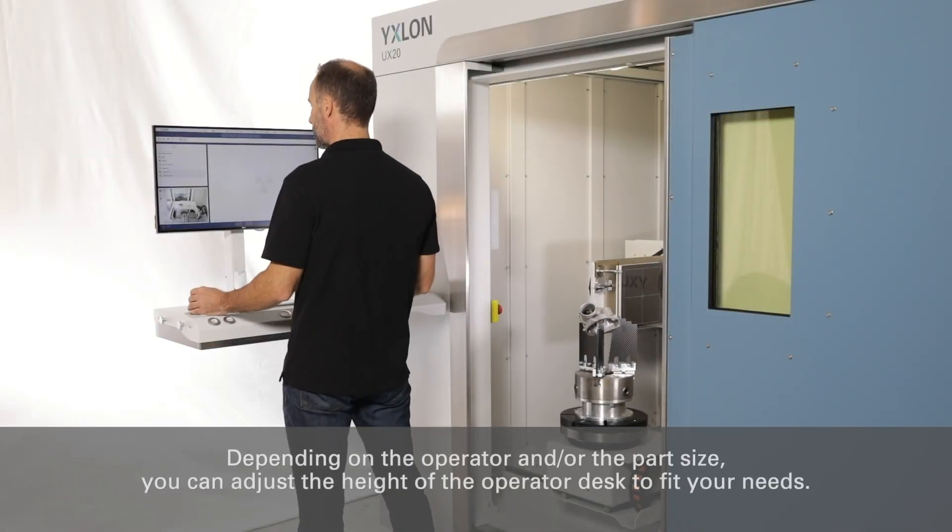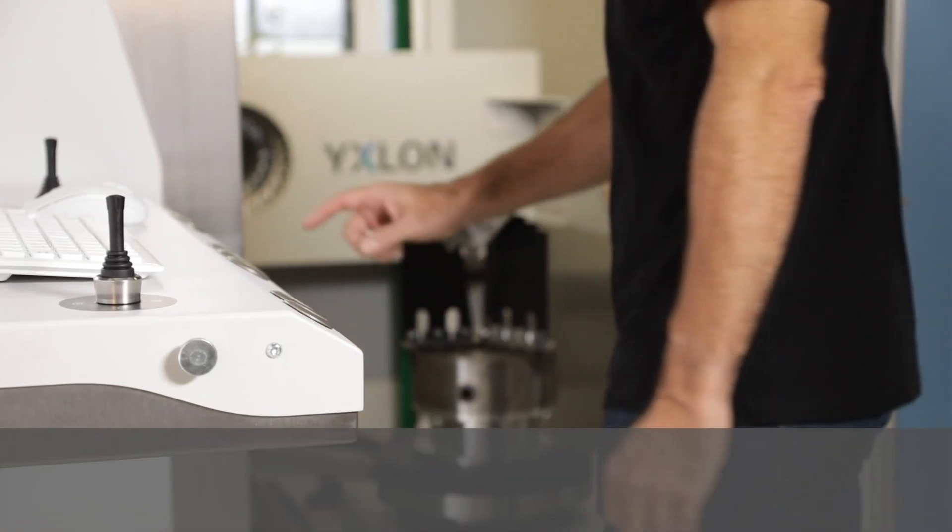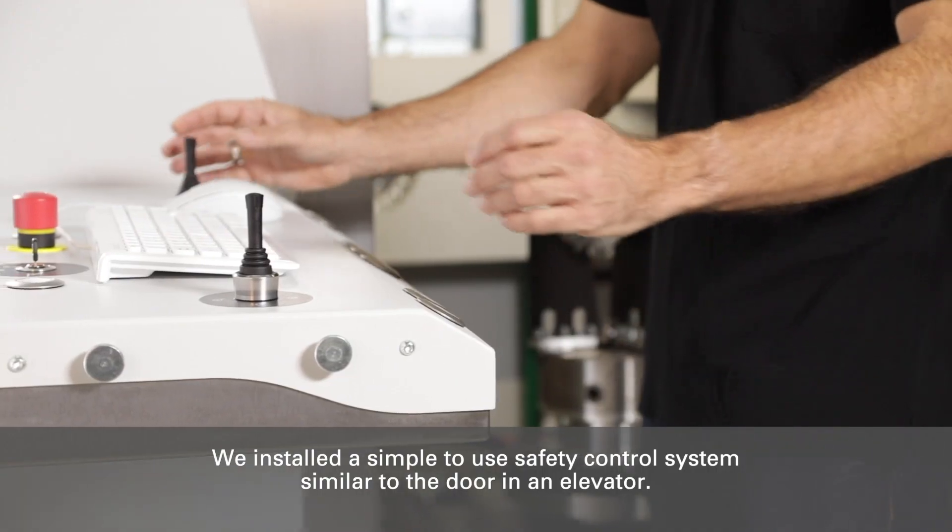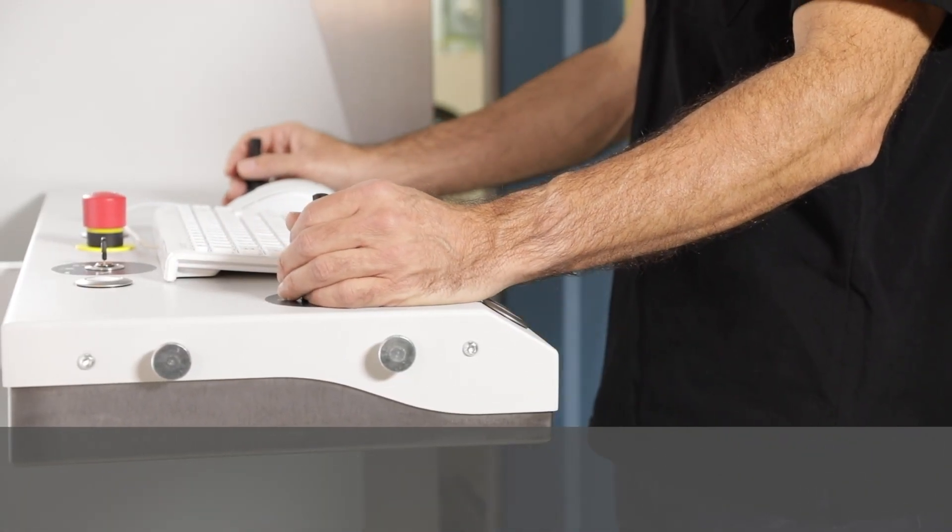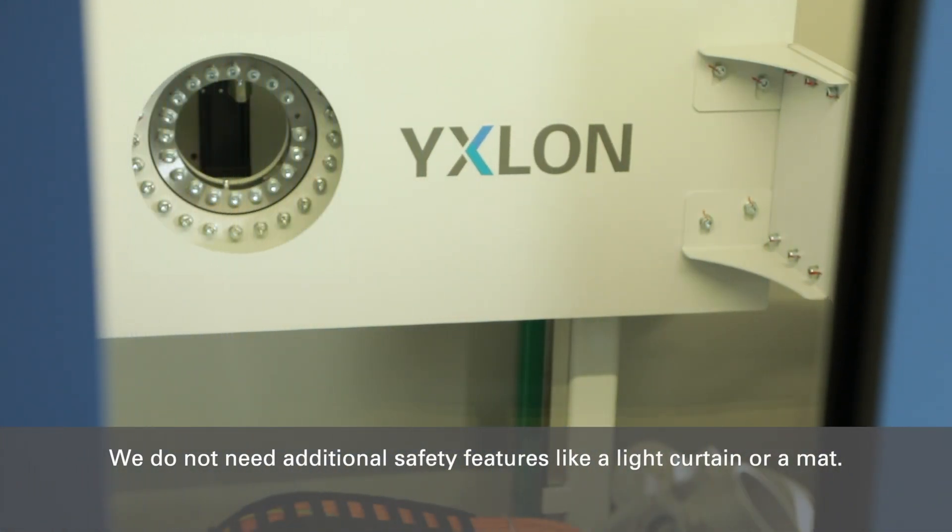Depending on the operator and/or part size, you can adjust the height of the operator desk to fit your needs. We installed a simple-to-use safety control system similar to the door in an elevator. We do not need additional safety features like a light curtain or a mat.